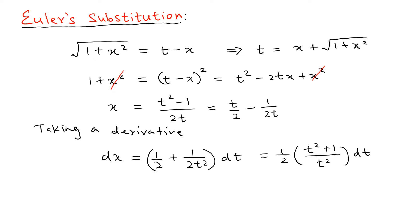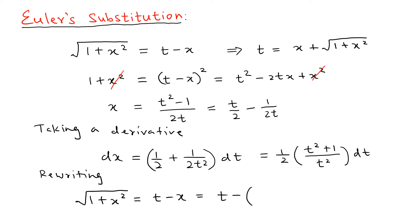We also need to express the square root term 1 plus x squared, which equals t minus x, in terms of t. Substituting x equals t over 2 minus 1 over 2t, we get t minus the quantity t over 2 minus 1 over 2t, which simplifies to t over 2 plus 1 over 2t. Using a common denominator, this becomes t squared plus 1 over 2t.